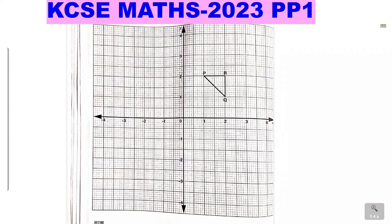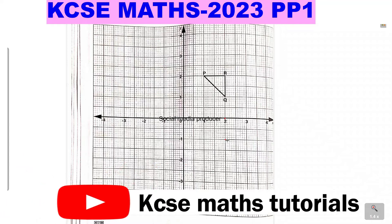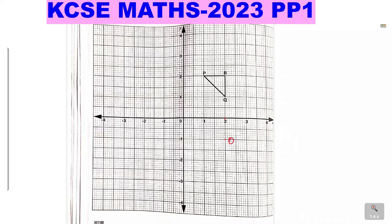The x-axis is going to act as the mirror line. The property of reflection is that the object and image should be equidistant from the line of reflection. We start with Q — the distance between Q and the x-axis is two squares. So from point (2,0) you count two squares down to get Q'. Then look at R: from R to the x-axis is four squares, so from the x-axis count four squares to get R'.